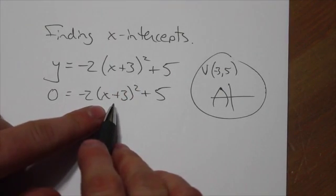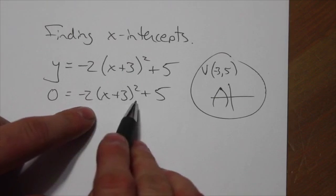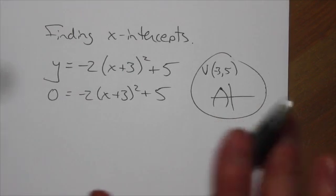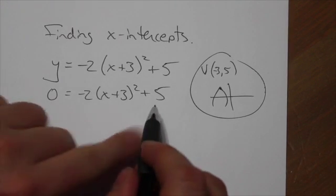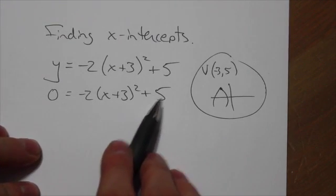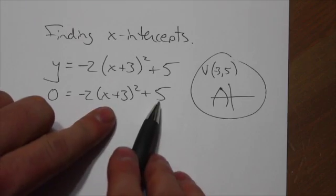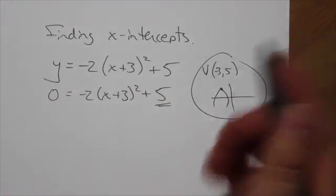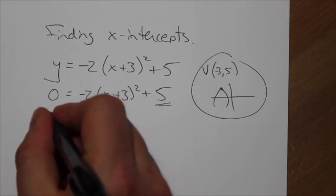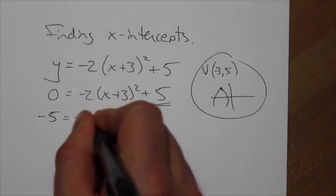Now, I know the temptation for a lot of us is to square this (x+3). And then that'll work. I'm not denying that that'll work. But I think we're going to get there a lot quicker if instead of doing that, we're going to bring the 5 over. We've got two terms here. We're going to bring that q term, if you think about it in terms of our vertex form. Bring that over first. So I subtract that from both sides.